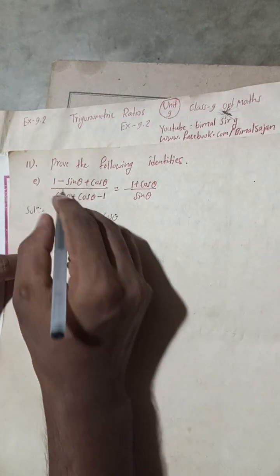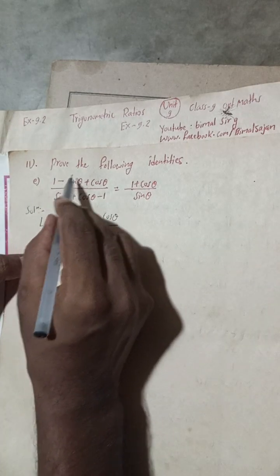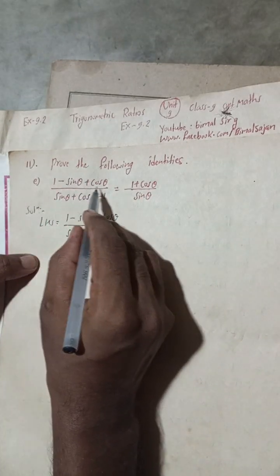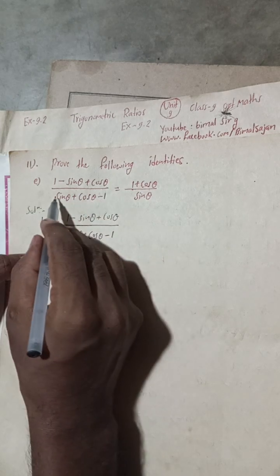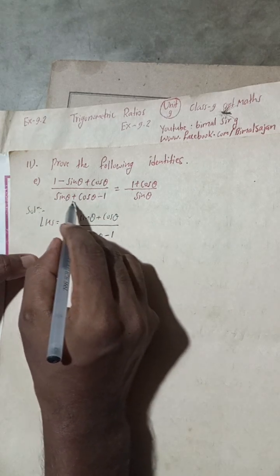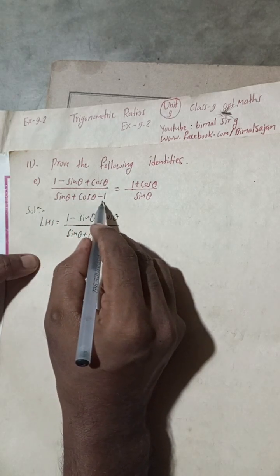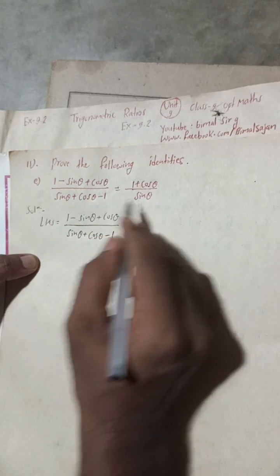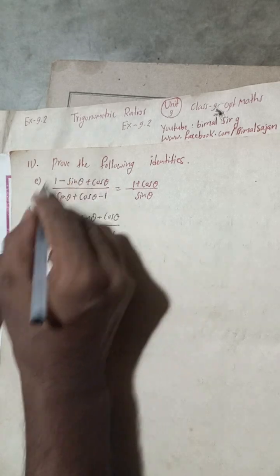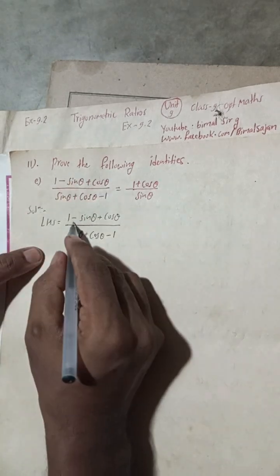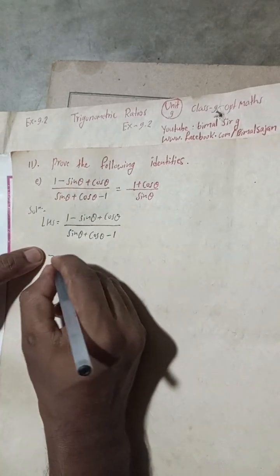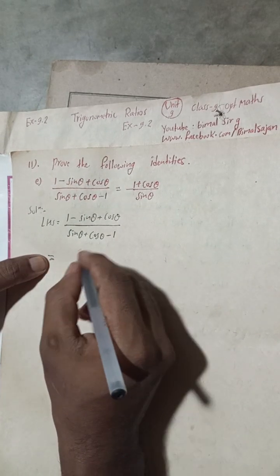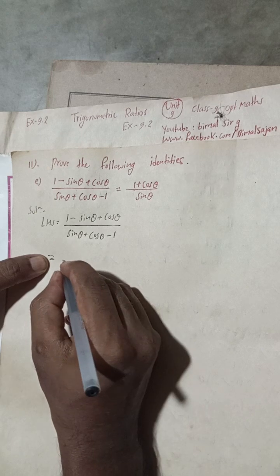So the question is: prove the following identities. (1 - sinθ + cosθ) / (sinθ + cosθ - 1) is equal to (1 + cosθ) / sinθ. I will take the LHS.